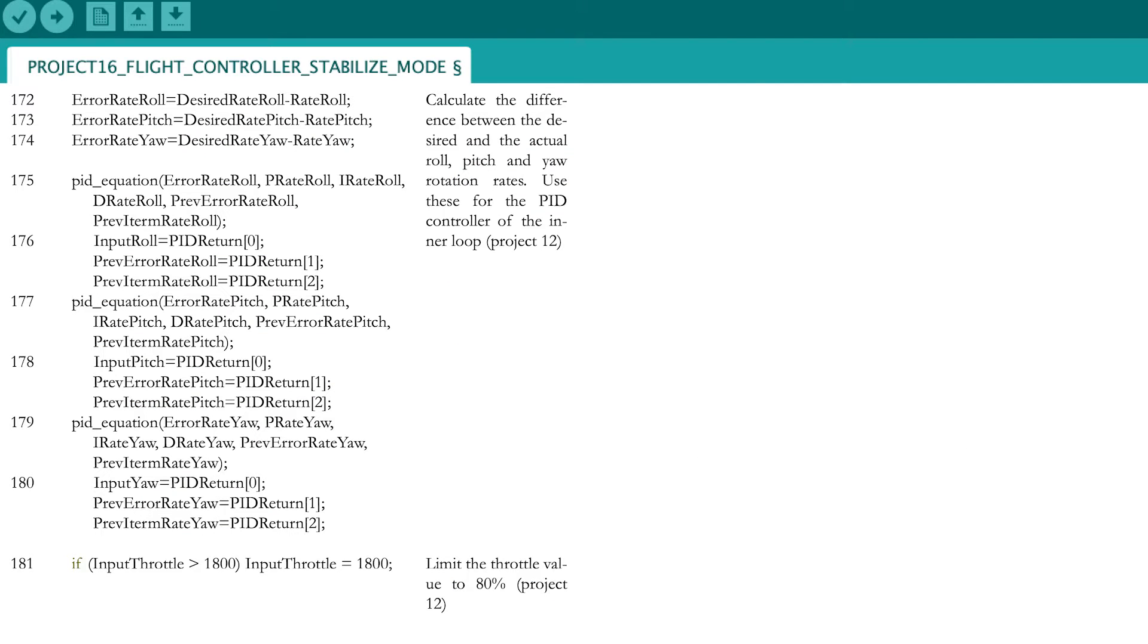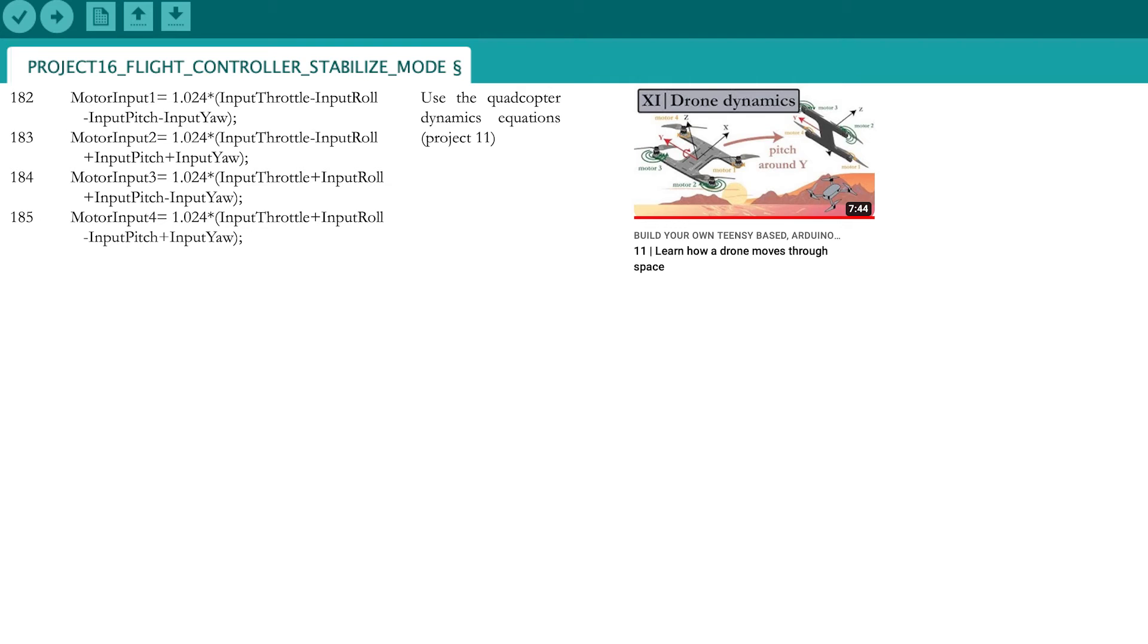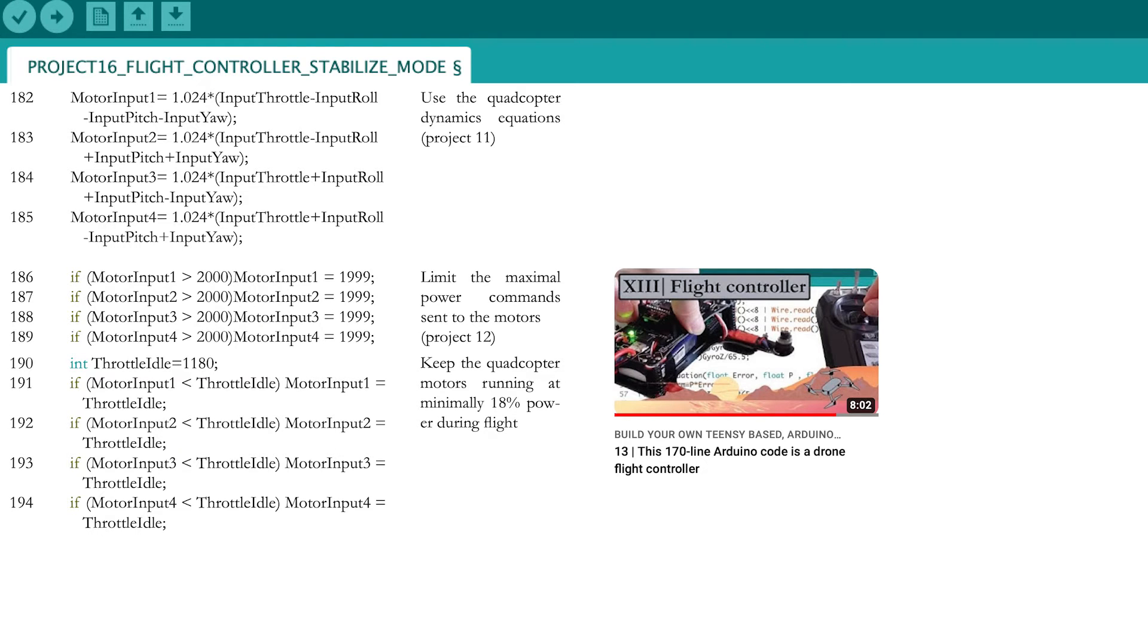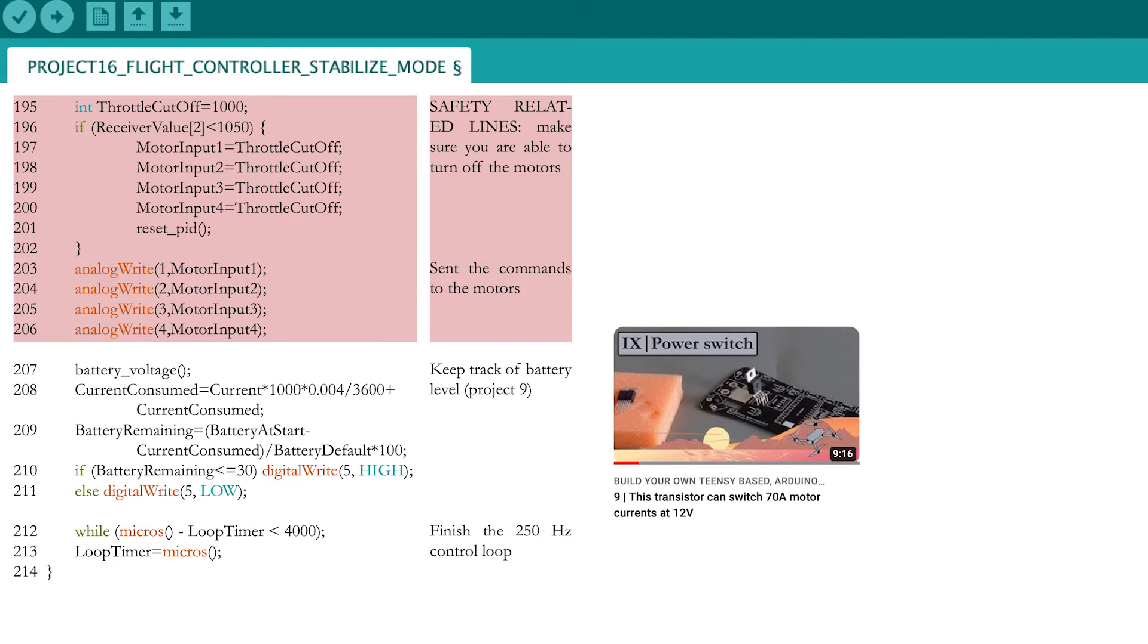Proceed subsequently to the PID controller for the inner loop rotation rates in blue, in order to obtain all parameters for the quadcopter dynamic equations derived in project 11. Now add the same motor limits as in part 13 and finish the loop part by keeping track of the battery level and waiting until 4 ms have passed.